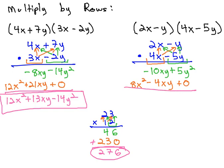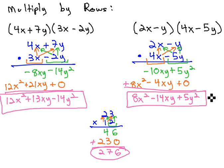Now, with our like terms lined up, we're ready to add the columns together to give us 8x squared minus 14xy plus 5y squared for our final solution.